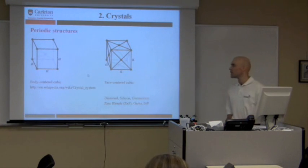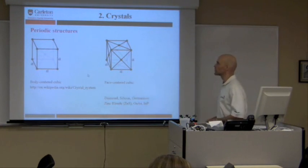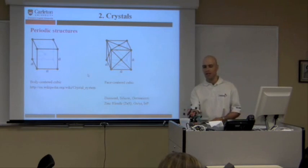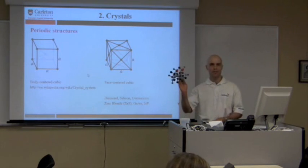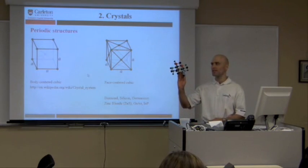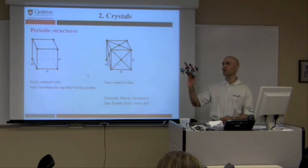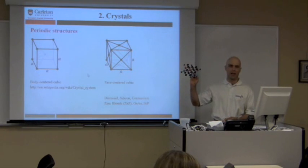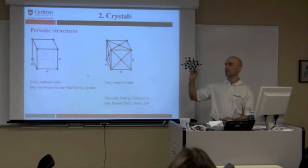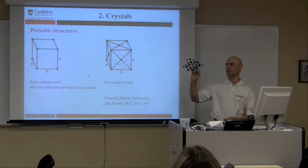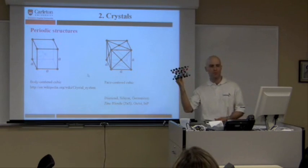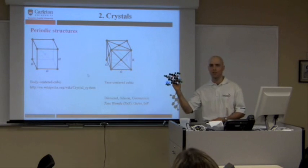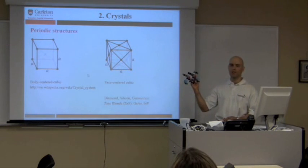The next word is crystals. What are crystals? They're periodic structures. This, for instance, is a zinc blende structure. If you ignore the different colors, it's also what a diamond structure is — silicon, germanium. These are all structures used in your computers.